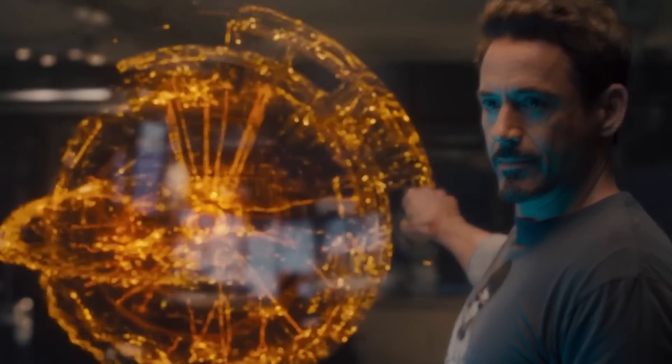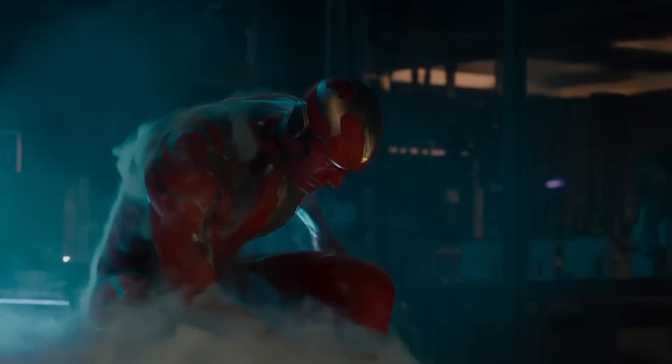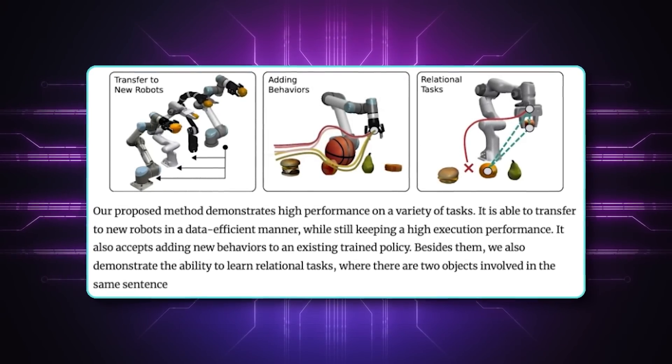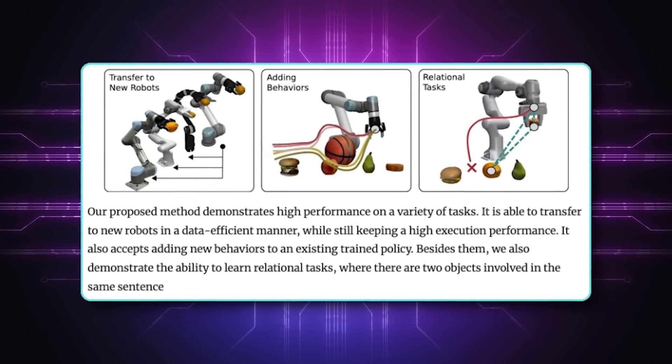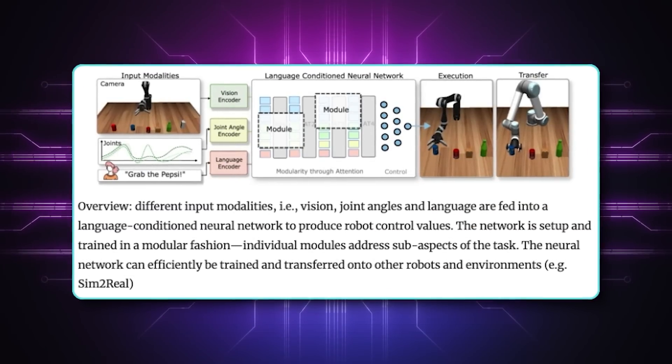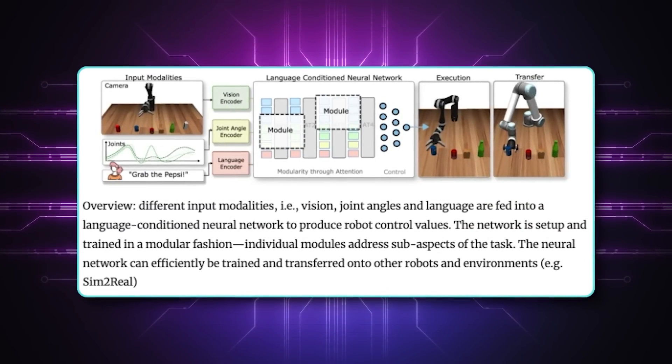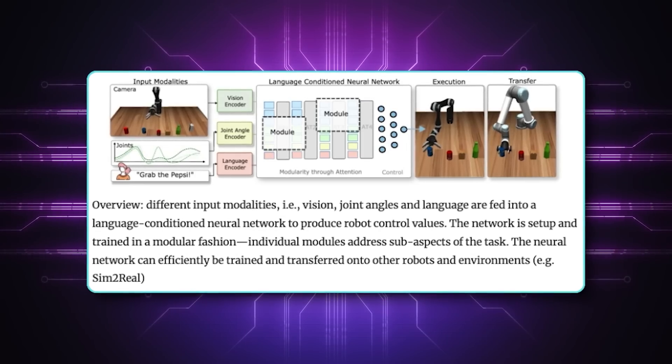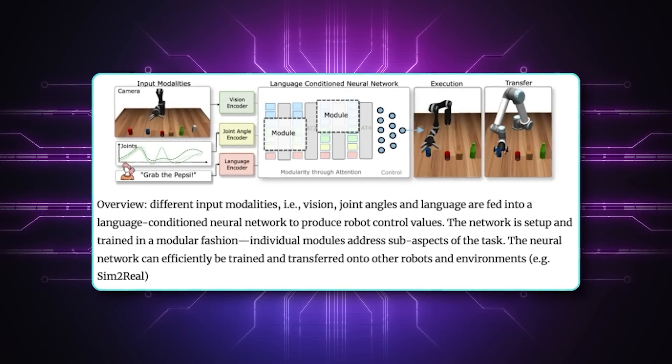But this isn't just theoretical. They tested HPT in both simulated and real-world scenarios. In simulations, they tried different tasks like moving objects and interacting with different environments, and HPT consistently outperformed other approaches. They also tested it on real-world robots, including tasks like feeding a pet and performing assembly tasks, and found that HPT was more robust and adaptable than traditional models.